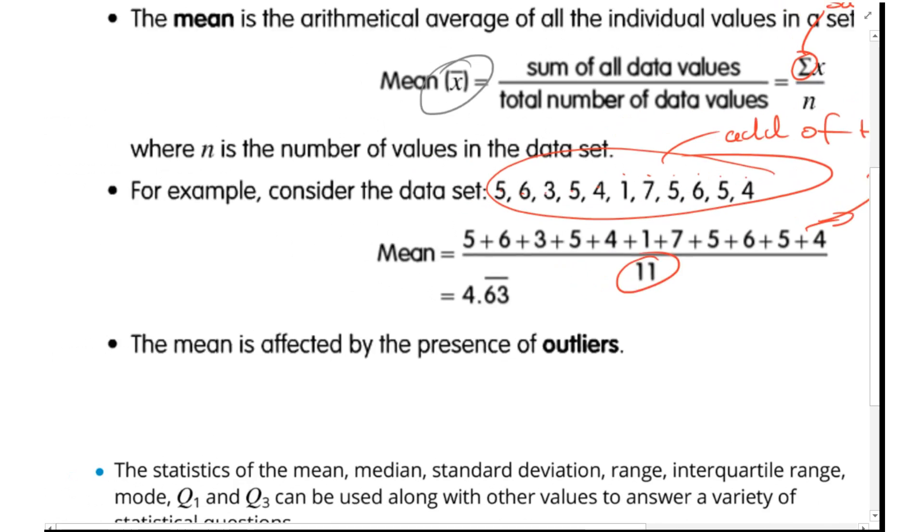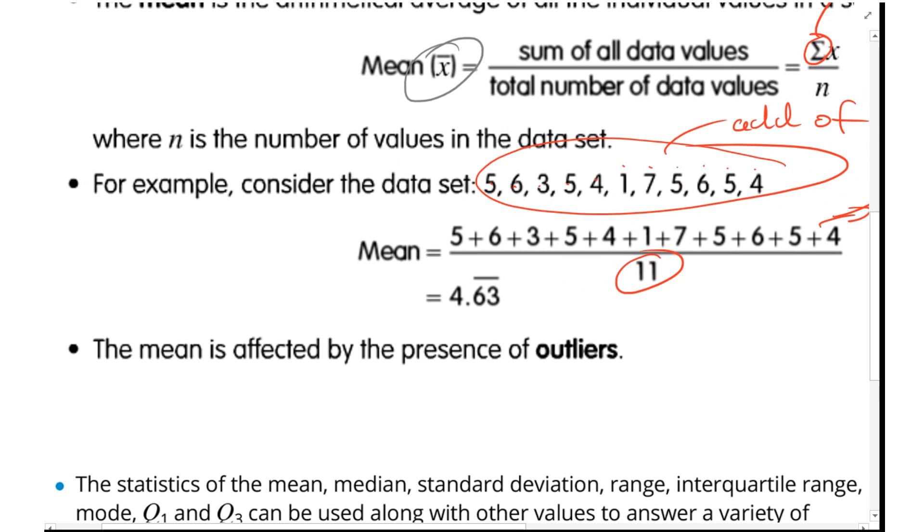The mean is actually affected by the presence of outliers, unlike the median. I'll give you a really simple example here. If I go 3 plus 4 plus 5, divide that by 3, that gives...